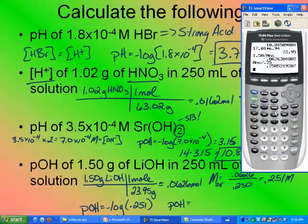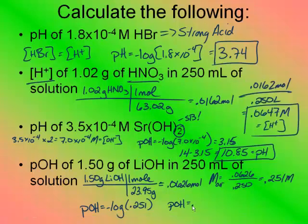Now because this is a base, I would expect my pOH to be a low number. And I get 0.601. Is 0.601 a small number? Yes, it is. Therefore, hopefully I did it correctly. If not, at least I'm in the right ballpark. And that's how to calculate pH, pOH, concentrations, etc. of different acids.